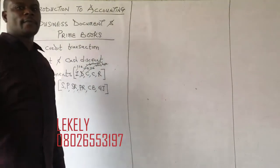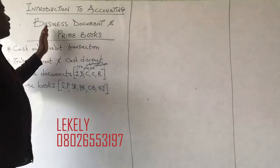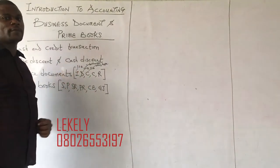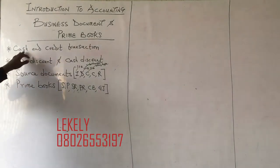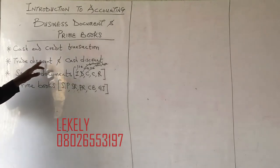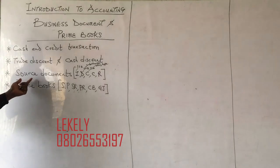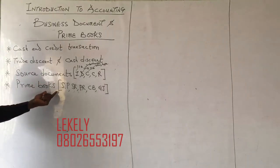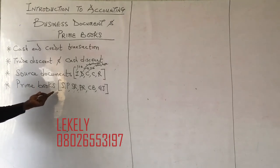Good day. Today we are looking at business documents and prime books. We are going to be looking at cash and credit transactions, trade discount and cash discount, source documents, and prime books or subsidiary books.